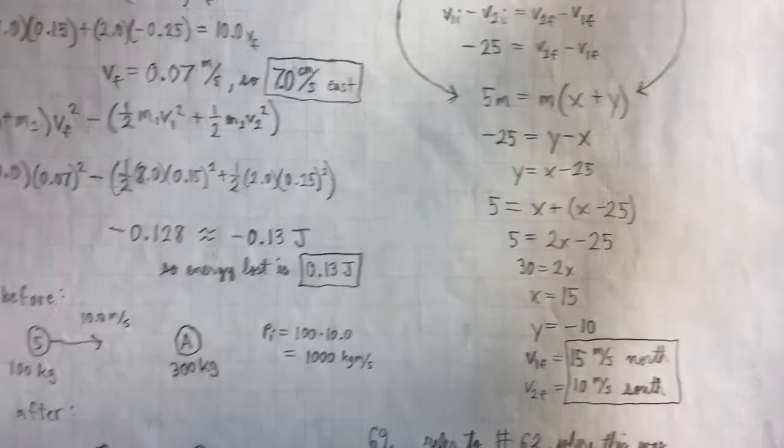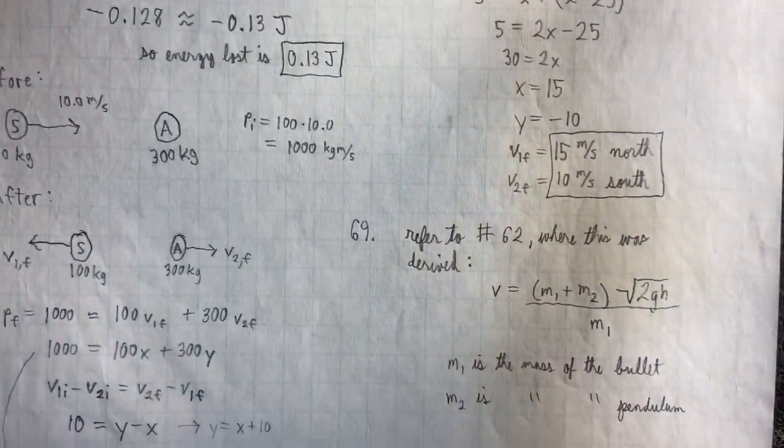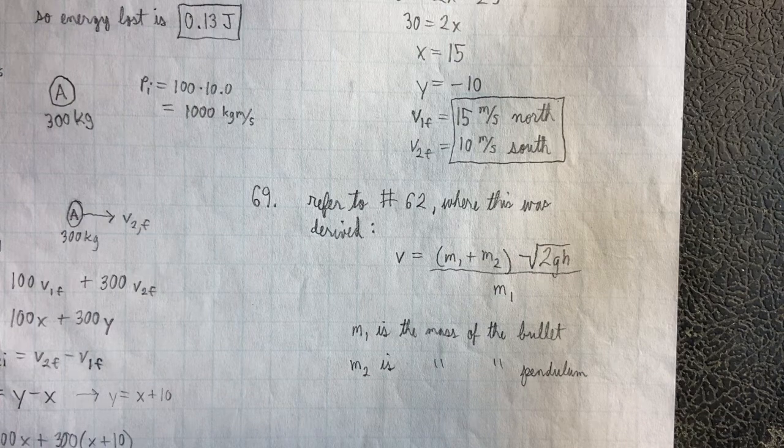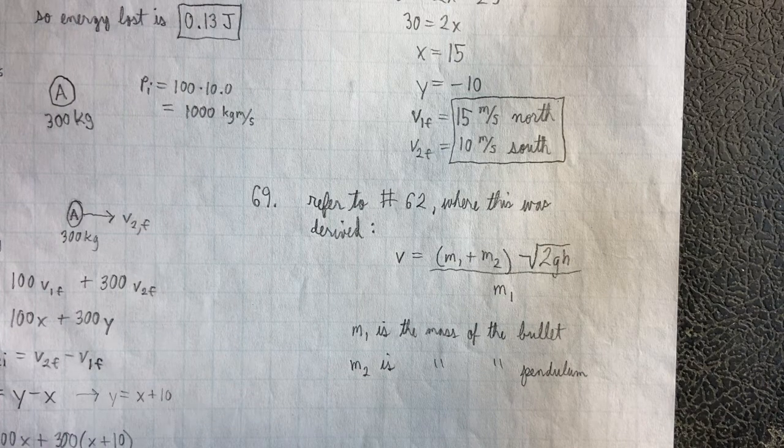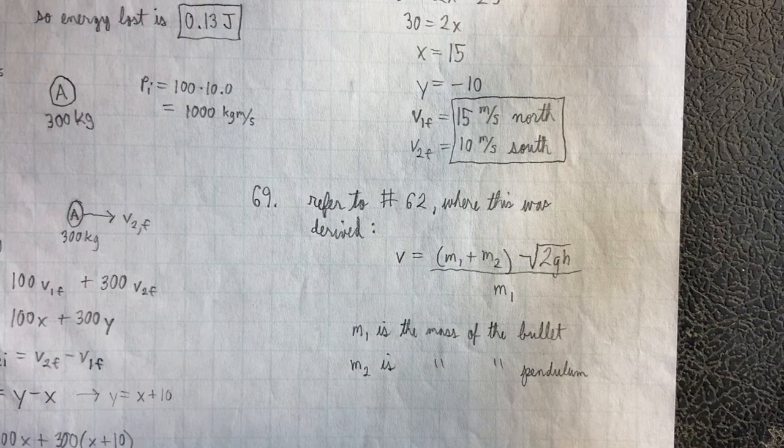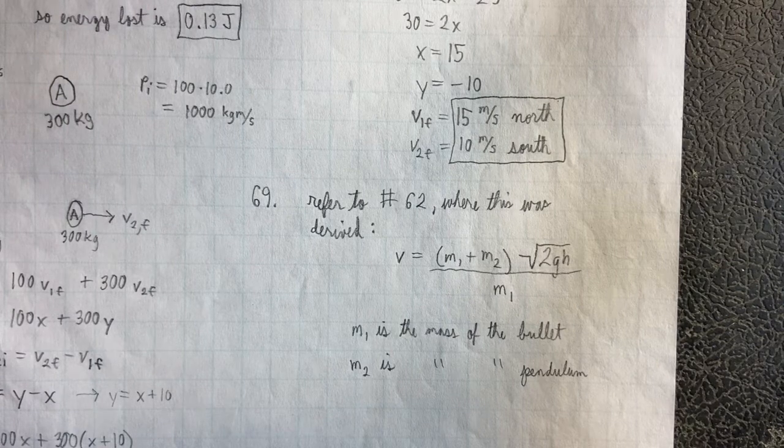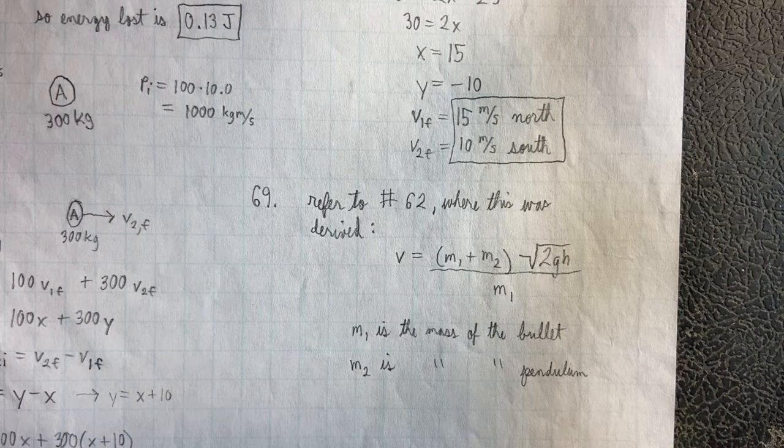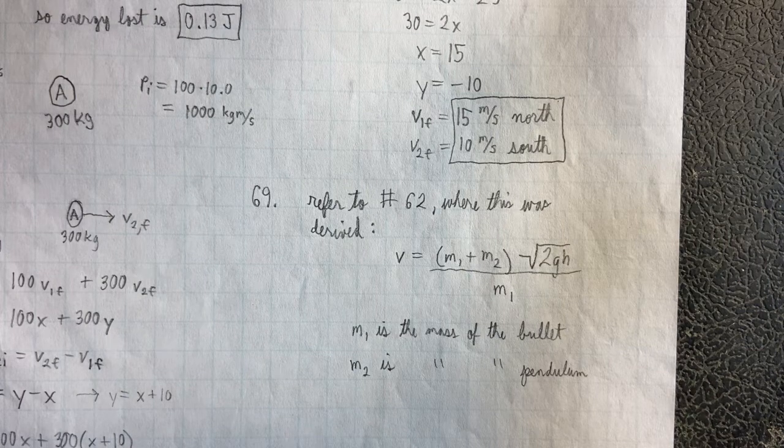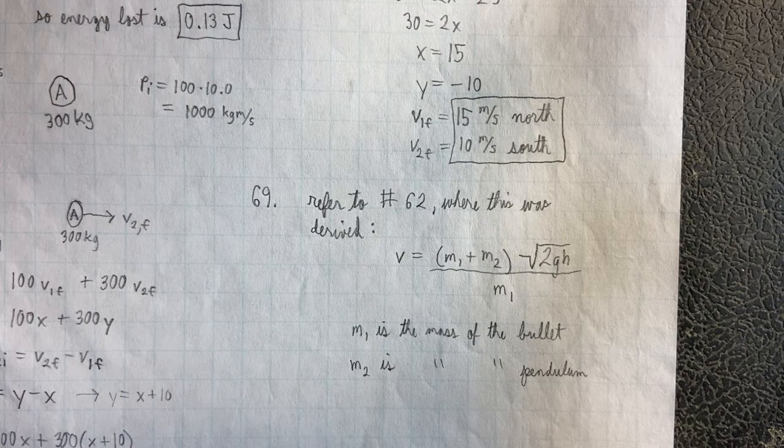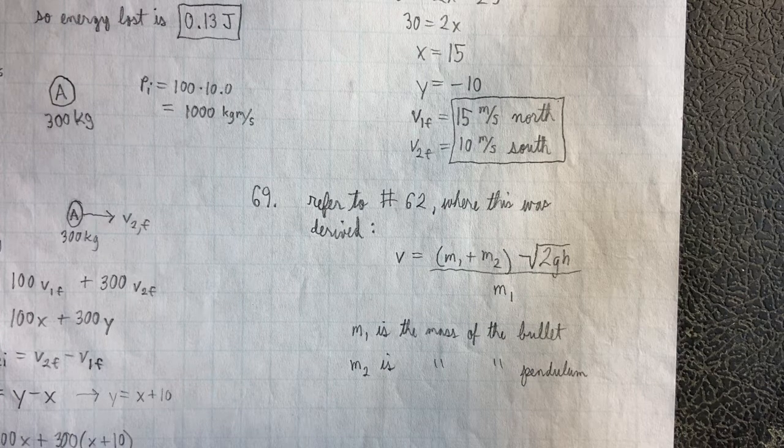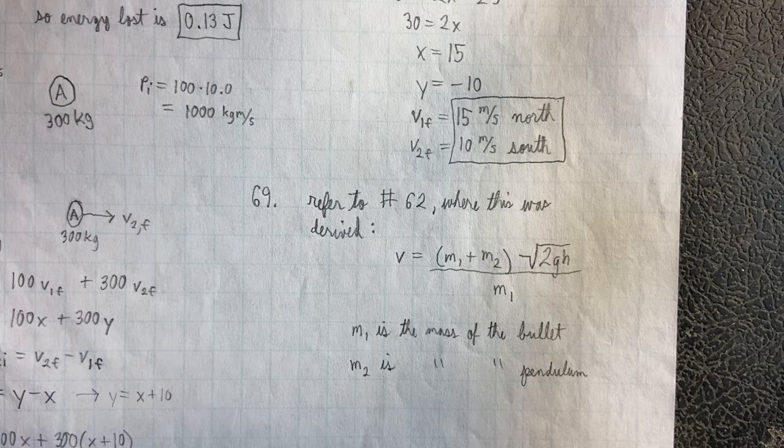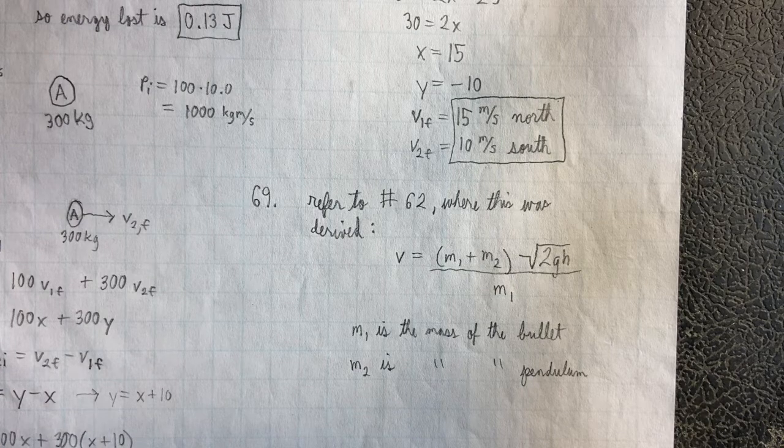All right, now in number 69, they just want you to use symbols. All right, so if we refer to number 62, which we already did, we were able to derive there that v equals m1 plus m2 root 2gh over m1, where m1 is the mass of the bullet, and m2 is the mass of the pendulum. All right, that's it for this problem set. Hopefully the explanations and answers helped a little bit. I'll see you in class.